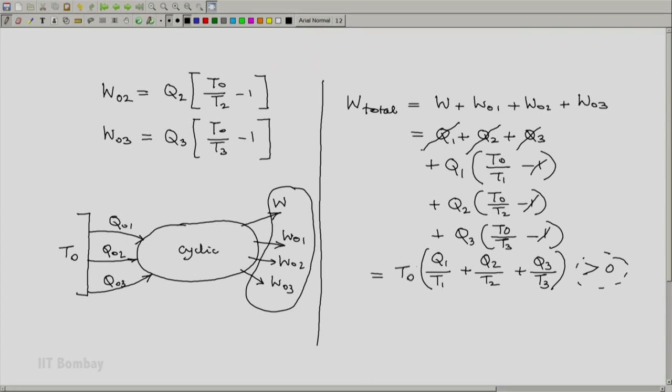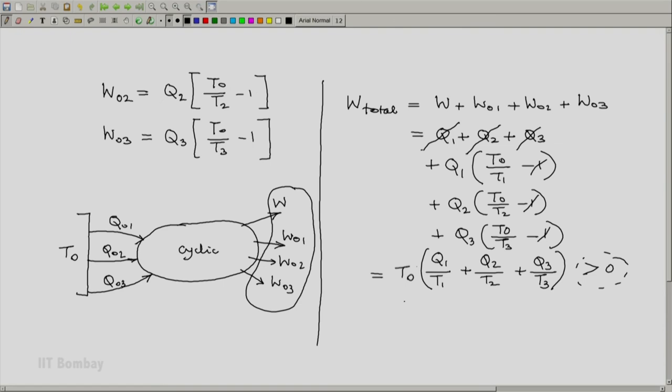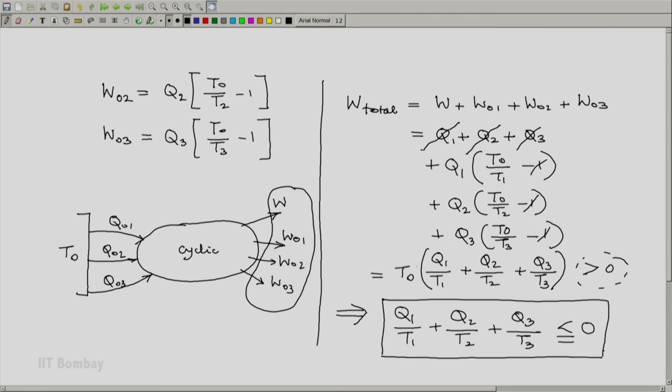If our assumption is true and valid, what we have done is set up a 1T heat engine, which obviously we cannot do because it violates the second law. That means our assumption is incorrect. It is a false assumption. Hence, this implies by reductio ad absurdum that Q1/T1 plus Q2/T2 plus Q3/T3 must be less than or equal to zero, which is the Clausius inequality for a 3T machine.